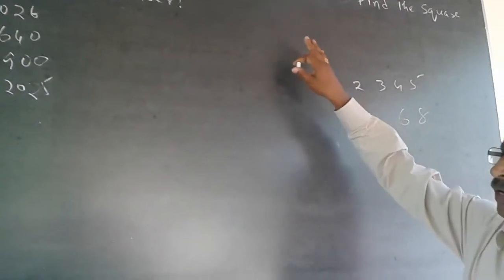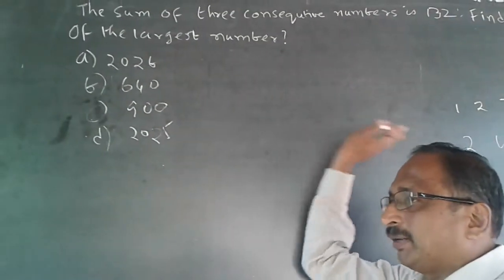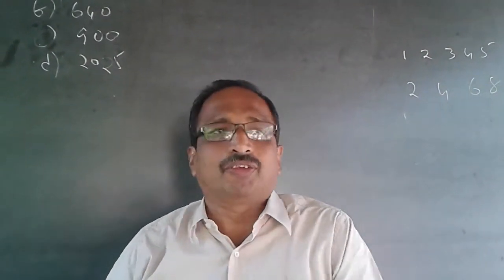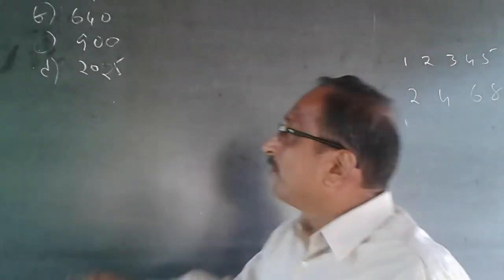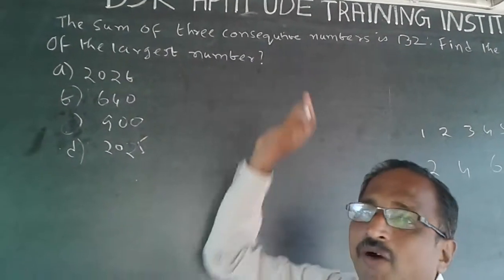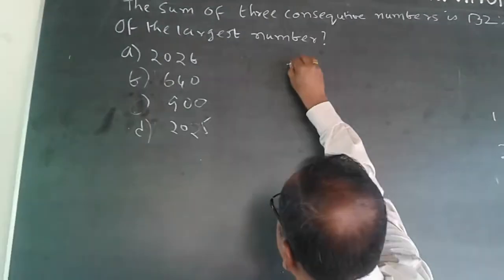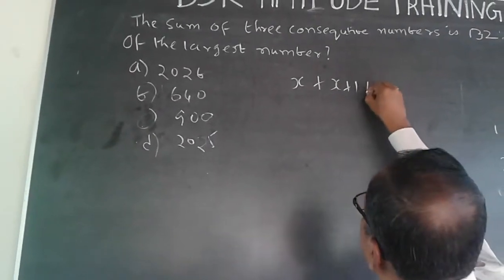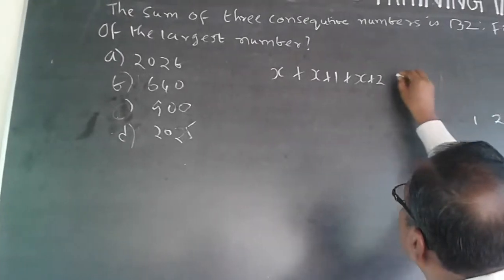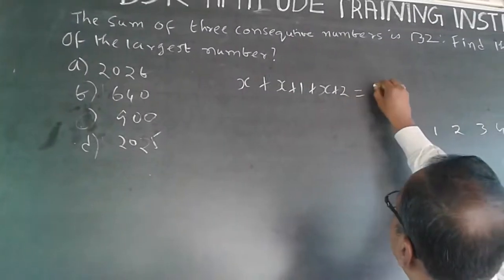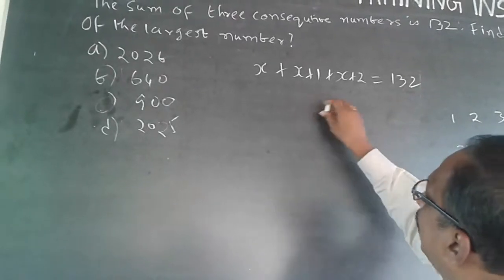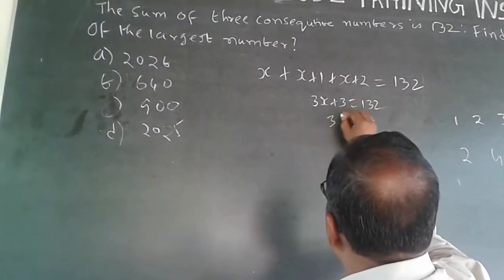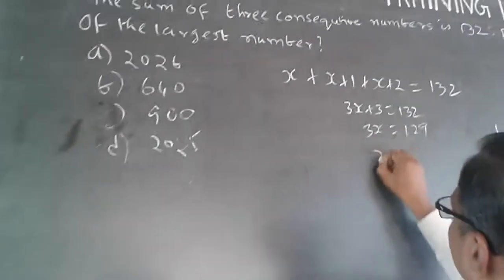Here we have 3 consecutive numbers, and consecutive numbers are an Arithmetic Progression because the difference between each number is the same. Since we don't know the starting number, we use a variable x. So the three numbers are x, x+1, and x+2. Their sum equals 132, giving us 3x + 3 = 132, so 3x = 129, and x = 43.